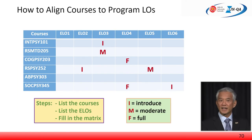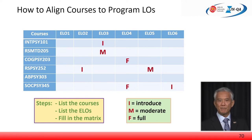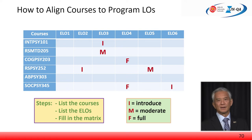There are other ways to denote the relationship strength, for example the use of one tick, two ticks, or three ticks, or simply a number — one for not related, five for strongly related. This slide shows the mapping scheme of I for introduce, M for moderate, and F for full or 100% alignment. The production of a courses to ELO map is a requirement for an AUNQA assessment.